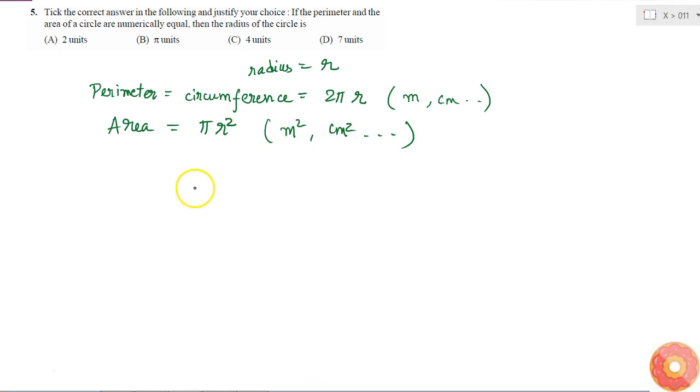If these two values are equal, that means 2πr equals πr². I can write it as 2πr - πr² = 0.